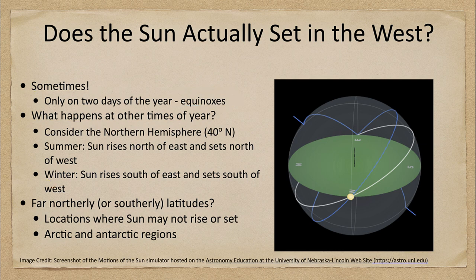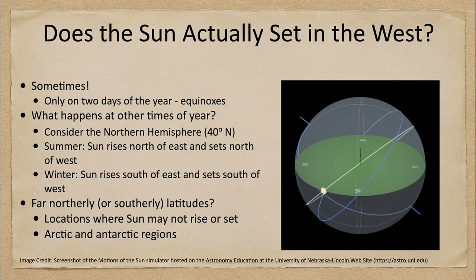Let's look at that in the northern hemisphere at a latitude of about 40 degrees as an example. What we find is that in the summer, the Sun will rise north of east and set north of west. Here we see the Sun and the celestial equator — that's where the Sun would be on the equinox.